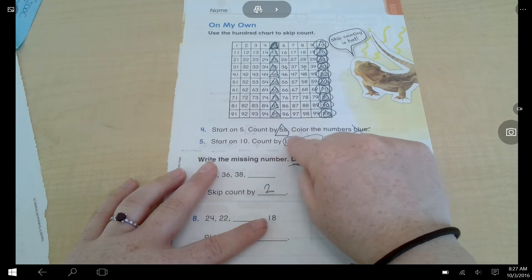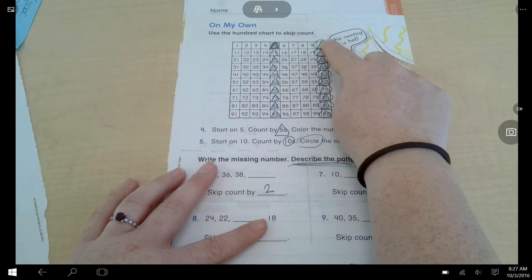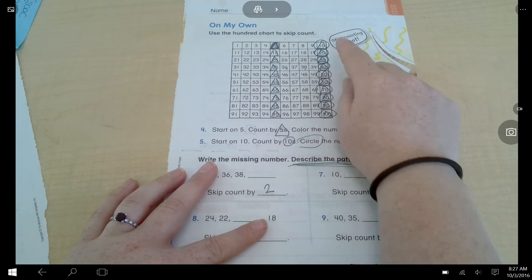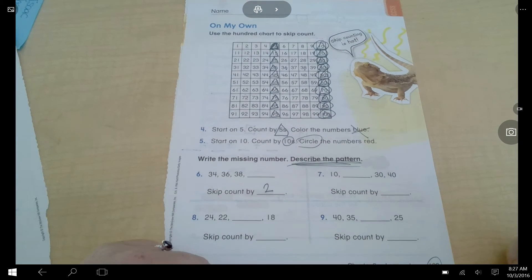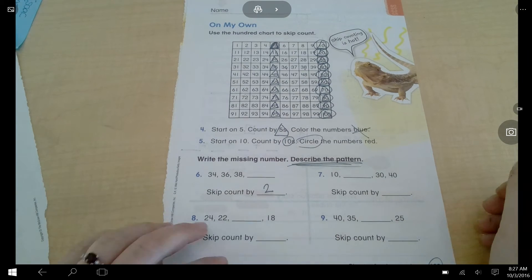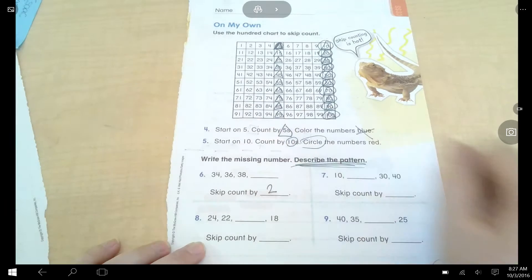The next number, it says, is to skip count by 10. So, we'll start at 10 and skip count. 10, 20, 30, 40, 50. I want you to draw a circle around all of those numbers. What do you know it is? Okay. Pause the video. Fill out your hundreds chart there.